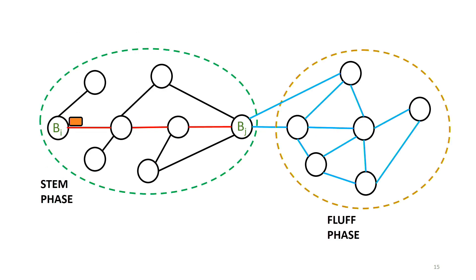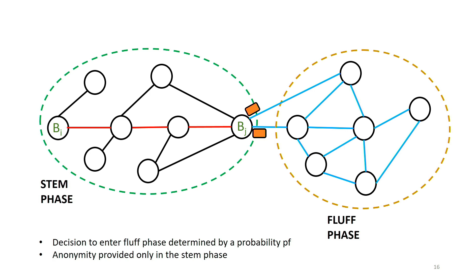In the stem phase, a transaction generated by node BI is always transferred via the same line — the privacy subgraph. The stem phase converts to the fluff phase based on some probability PF, the forwarding probability. At node B subscript J, if the probability says not to forward via the privacy subgraph, it instead sends to the actual Bitcoin network, following the diffusion process. Even if existing attacks can trace the source of the diffuser (node BJ), they will not reveal who was the actual originator (node BI) — which is how anonymity is provided. We analyze the stem phase using our framework.